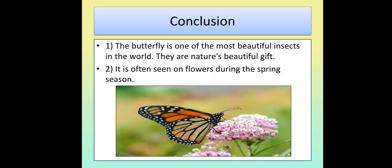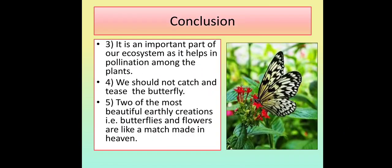Conclusion: First, the butterfly is one of the most beautiful insects in the world — they are nature's beautiful gift. Second, they are often seen on flowers during the spring season. Third, they are an important part of our ecosystem as they help in pollination among plants. Fourth, we should not catch and tease the butterfly. And fifth, two of the most beautiful earthly creations — butterflies and flowers — are like a match made in heaven.